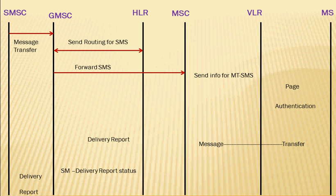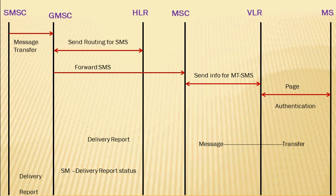The GMSC, upon receiving the routing information, forwards the SMS to the particular MSC. The MSC will send a request for mobile terminating SMS to the VLR. The VLR, upon receiving the same, will page and authenticate the particular mobile station. Then, while servicing, the MSC will send a message transfer to the mobile station.